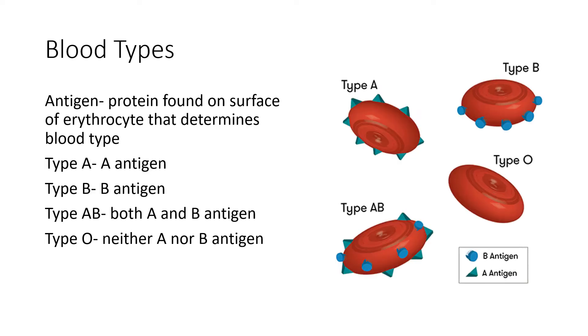Here's a super quick explanation of the ABO blood type system and how it can be used for blood transfusions. Your blood type is determined by the presence of antigens, which are proteins found on the surface of your red blood cells. If you have type A blood, you have the A antigen on your red blood cells. If you have type B blood, you have the B antigen, which is a different protein.